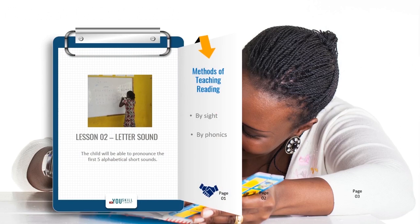The other problem is the child can read only as far as he or she remembers or can memorize a word. So new words that he or she comes across will be very difficult to pronounce, and the best bet is to guess the words, which most times may be wrong.